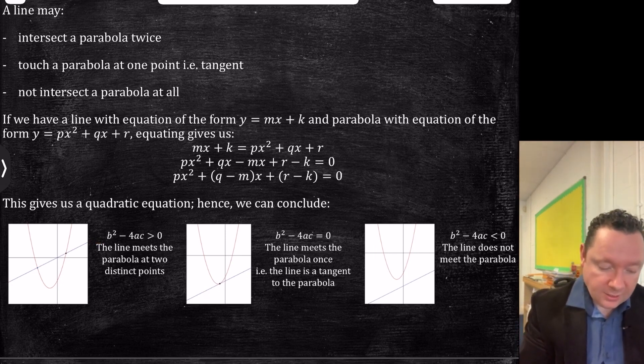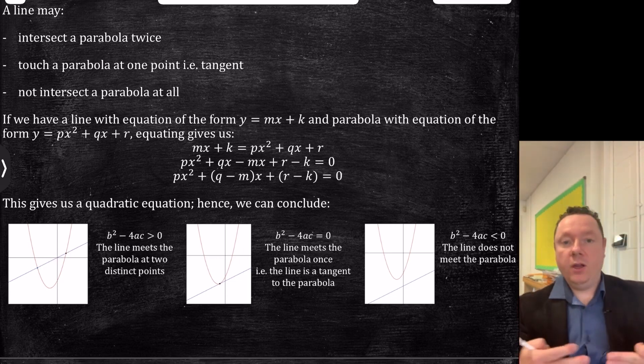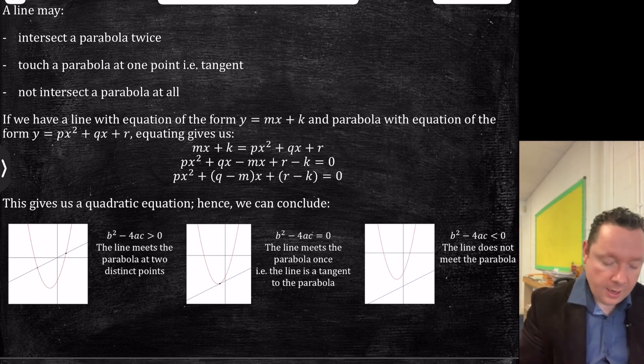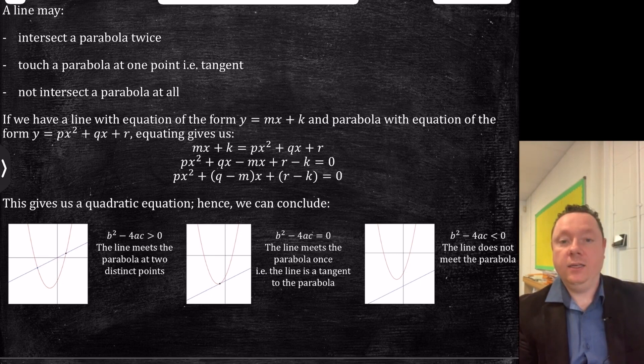If it was to intersect it twice, that means it's meeting it at two distinct points. If we were to put the equations of them equal to each other, or sub in, solve them simultaneously, then b squared minus 4ac would tell you whether it meets at two points, because you would get it greater than zero.